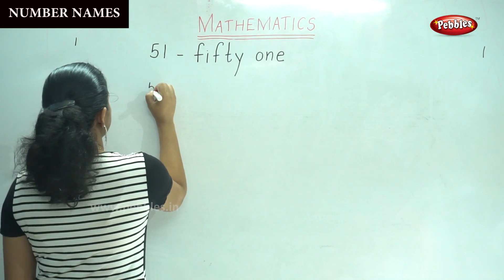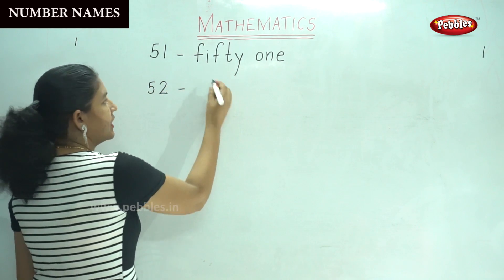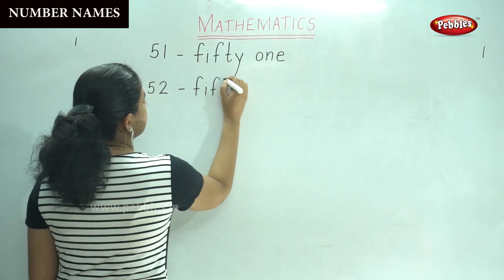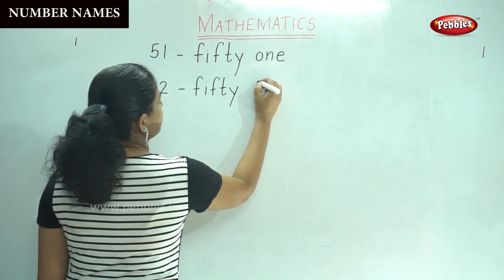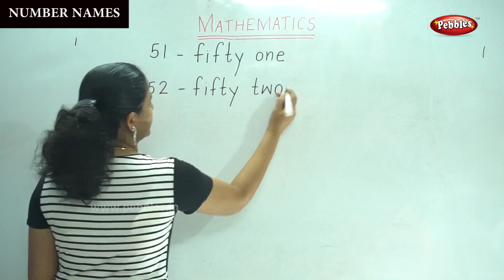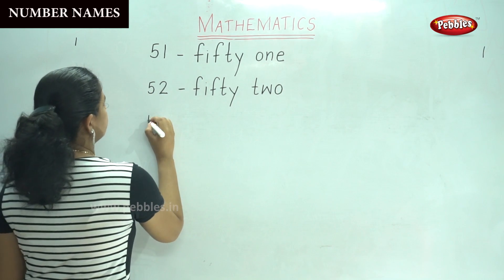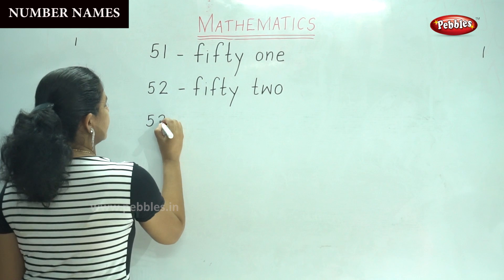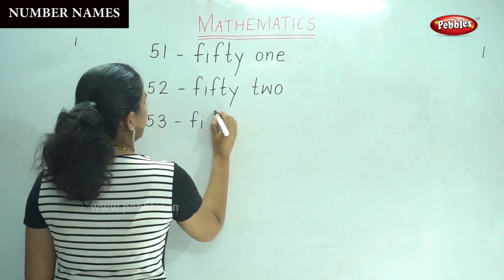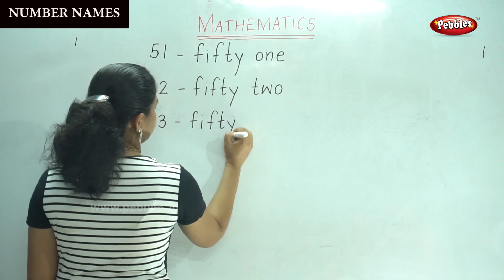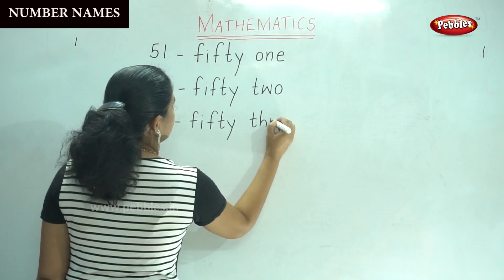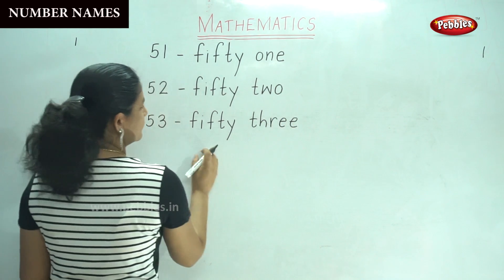Next, 52: F-I-F-T-Y — fifty. T-W-O — two. 52. Next, 53: F-I-F-T-Y — fifty. T-H-R-E-E — three. 53.